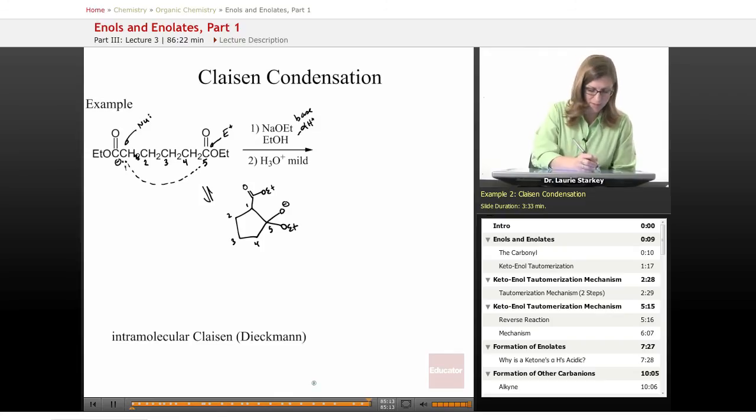All right, we can imagine this attacking and breaking the pi bond up. And where do we go from here? Well, this looks like a charged tetrahedral intermediate. And so we're going to have this collapse with our two arrows. Our O minus comes down, kicks off our leaving group.